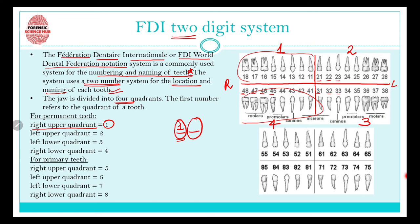The second digit in the FDI system works the same as in the Palmer notation: starting from the midline and going outward, the teeth are numbered 1 through 8. For primary teeth, everything is exactly the same except the first digit changes — instead of quadrants 1, 2, 3, 4, primary teeth use quadrants 5, 6, 7, and 8. The second digit still runs 1 through 5 from the midline, since there are only five primary teeth per quadrant.